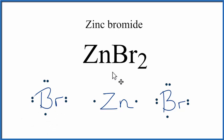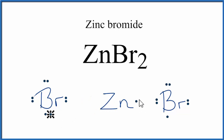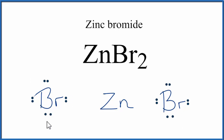So since it's ionic, the metal will transfer electrons to the nonmetal. The zinc will transfer an electron to this bromine, giving it a full outer shell, and then this electron will go to the other bromine, giving it a full outer shell as well. Now because this bromine gained an electron, and electrons are negative, that means that this bromine will have a 1- charge, as will this one.